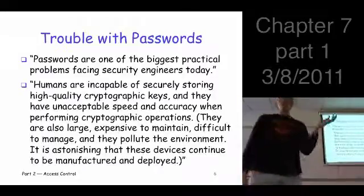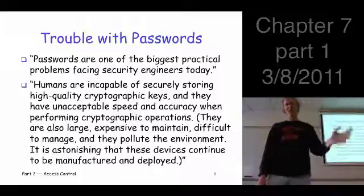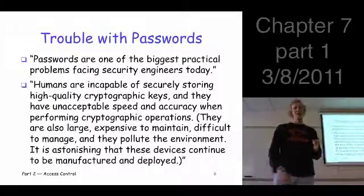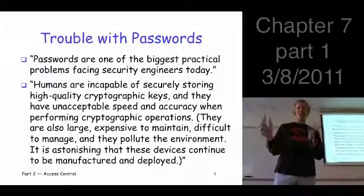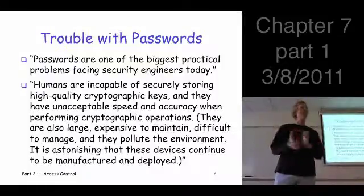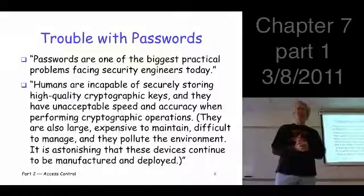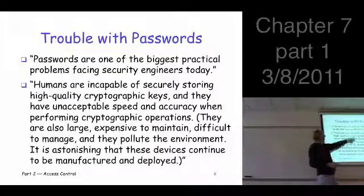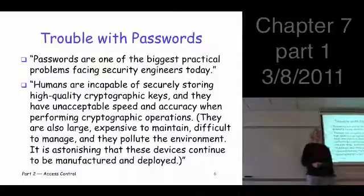It says, humans are incapable of securely storing high quality cryptographic keys, and they have unacceptable speed and accuracy when performing cryptographic operations. They're also large, expensive to maintain, difficult to manage, and they pollute the environment. It's astonishing these devices continue to be manufactured. But they really hit the nail on the head here. The issue is cryptographic keys.